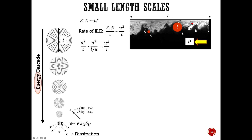Writing this in dimensional form, the shear strain tensor basically has units of velocity over length, i.e., u/x. So in the dimensional form at the smallest length scale, you get zeta (ζ) — the velocity of the smallest eddies — divided by eta (η), the length scale of the smallest eddies.